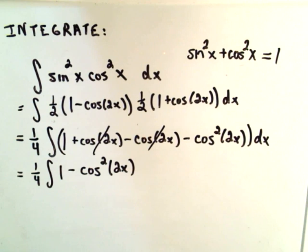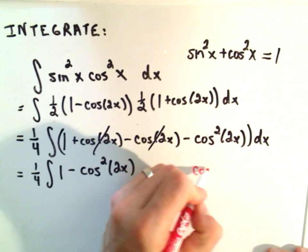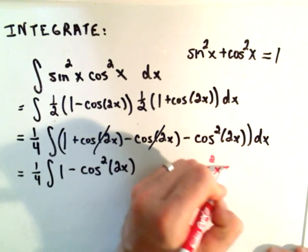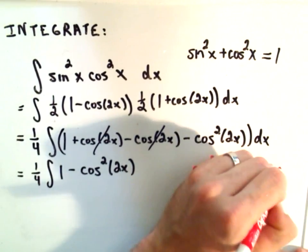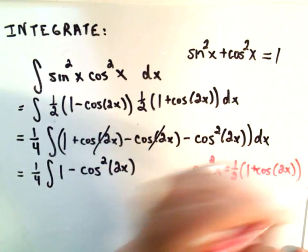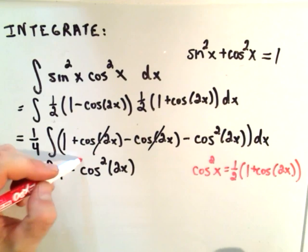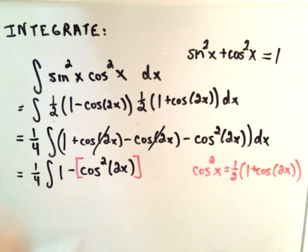Again, I'm going to use this identity just like a second ago. Cosine squared of x is one-half, one plus cosine of 2x. I'm going to use that identity on my cosine squared of 2x part.